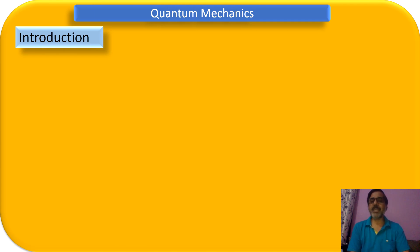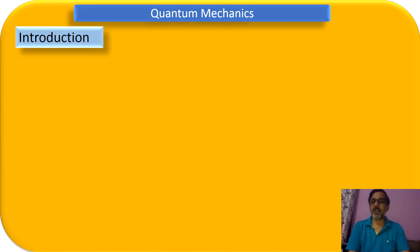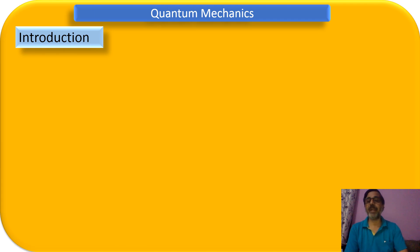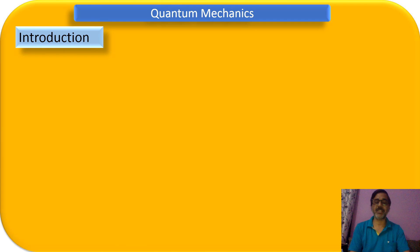So what is a law? A law is a statement which cannot be violated in any circumstances. Now let me introduce a small example where we can say Newtonian mechanics fails and we require a new law to prove those classical mechanics — an example of classical mechanics.